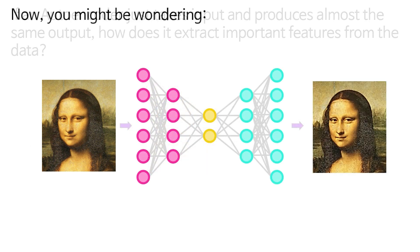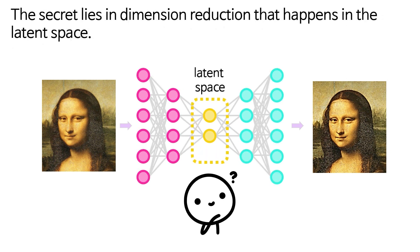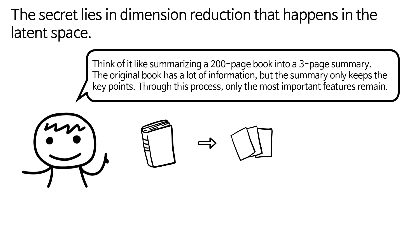Now you might be wondering: if an autoencoder just takes input and produces almost the same output, how does it extract important features from the data? The secret lies in dimension reduction that happens in the latent space. Dimension reduction means reducing the number of features in the data. This improves computational efficiency, reduces noise, and helps us understand the data better. For example, by removing unnecessary information and keeping only the important parts, we can improve the performance of the model.